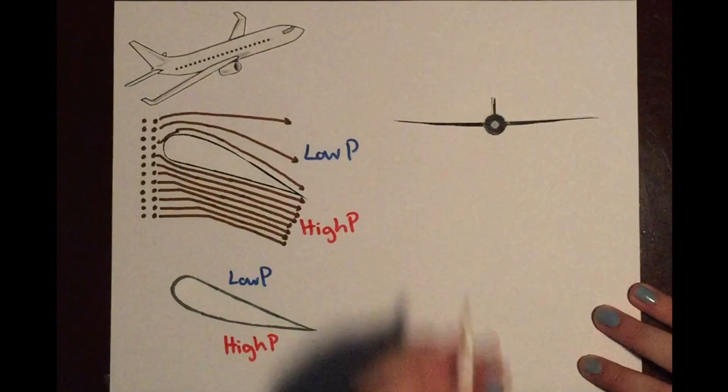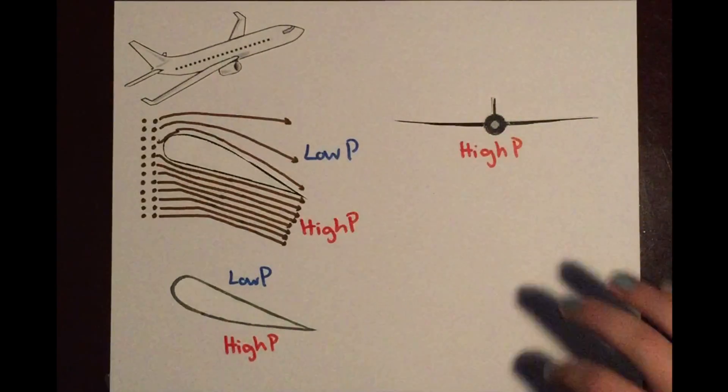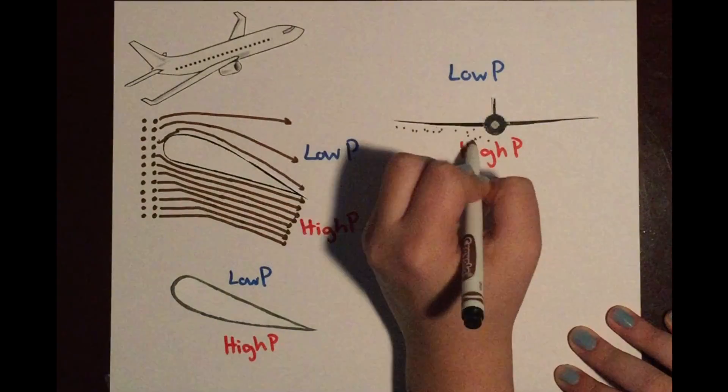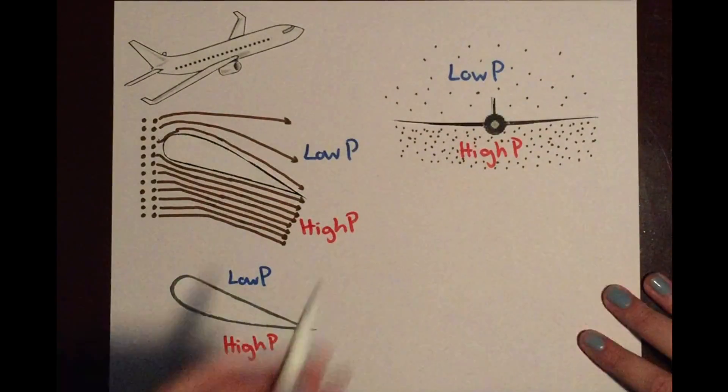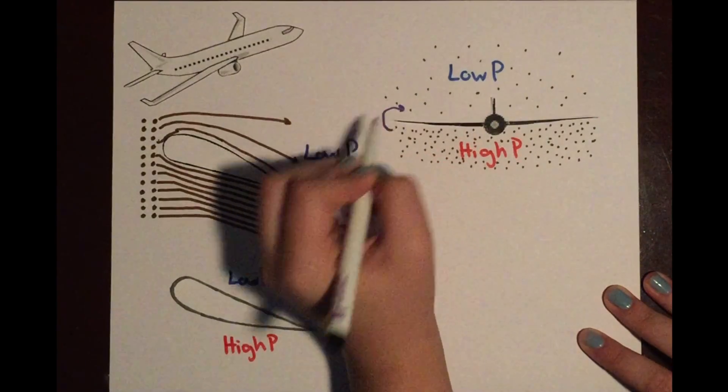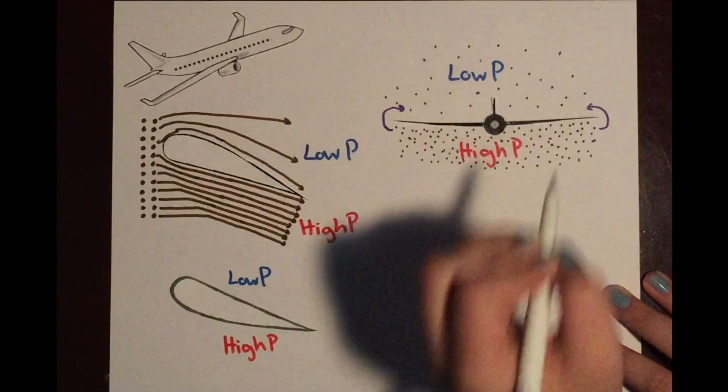Here we have the front view of an airplane. Since there is a high pressure on the bottom of the wing and a low pressure on the top, there are going to be many air particles on the bottom and only a few on the top. The particles on the bottom start to feel a little claustrophobic and want to move to the top of the wing, where there is more room.